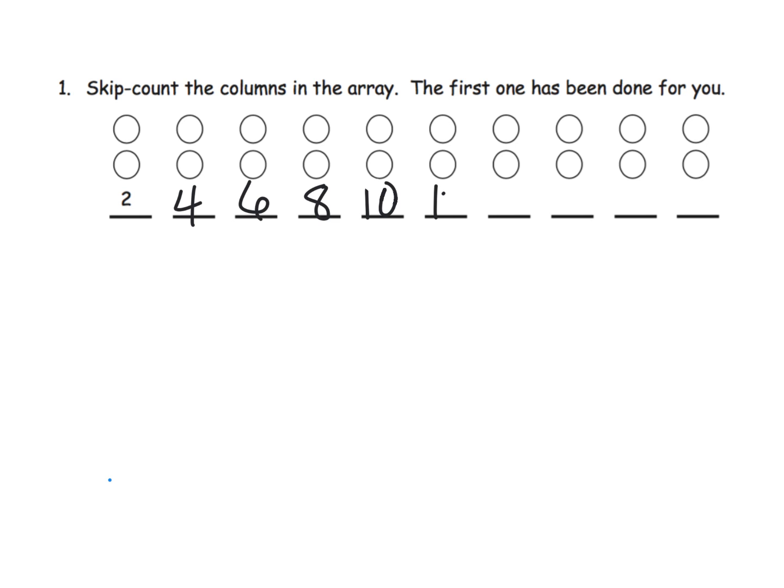And then twelve, and then fourteen, and sixteen, and eighteen, and twenty. And so if you want, here's an idea: you could say one, two, three, four, five, six, seven, eight, nine, ten, and now you can see the skip counting again in a slightly different way. Thirteen, fourteen, et cetera.